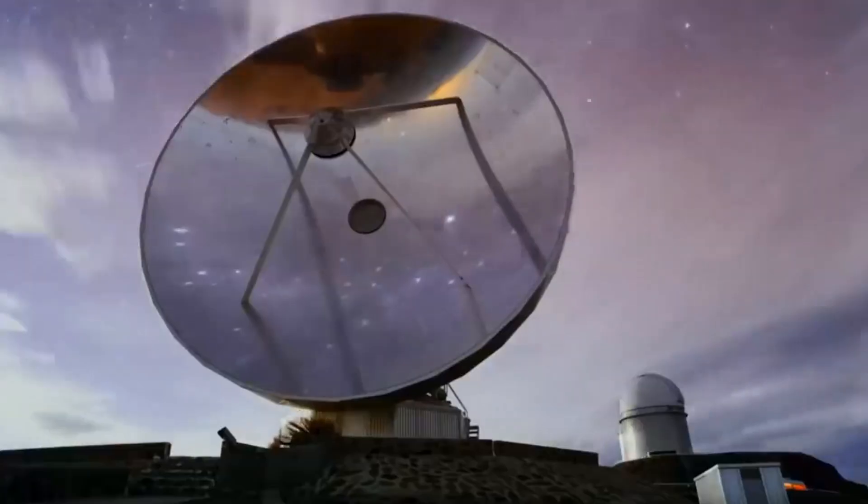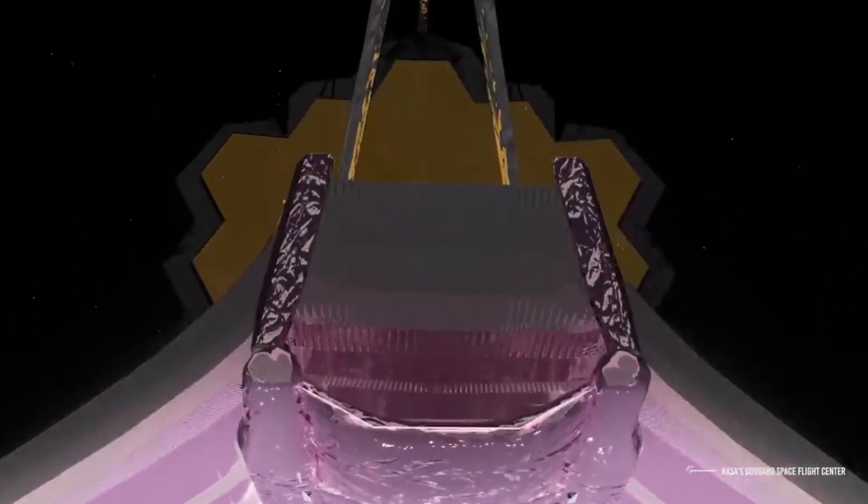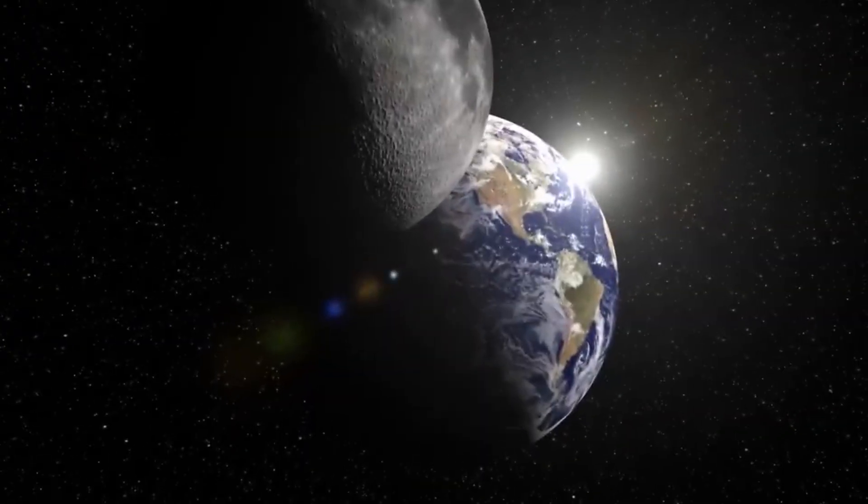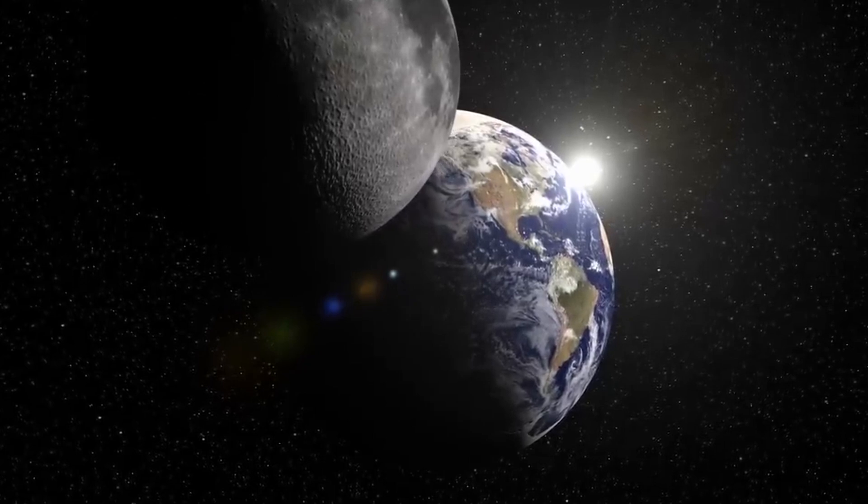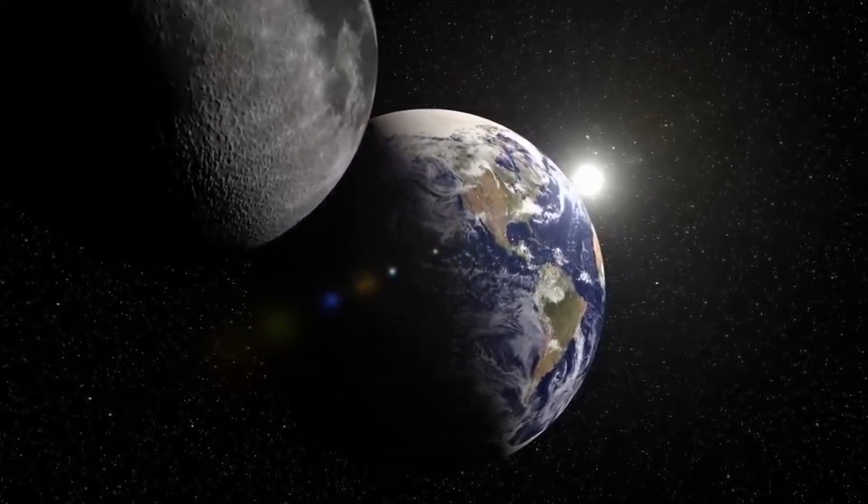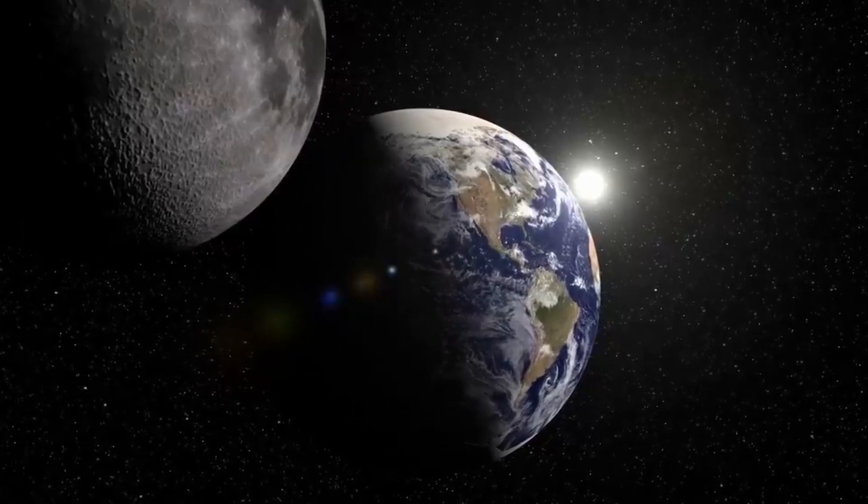The space telescope was too big to be transported in a rocket in its operational form, so it needed to be collapsed like origami to fit. Unfolding the telescope has proven remarkably difficult and may be one of the most challenging NASA projects, the US space agency has said.